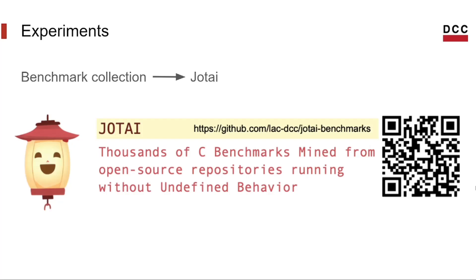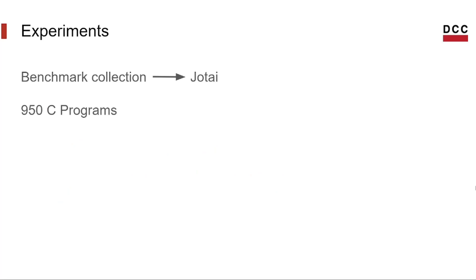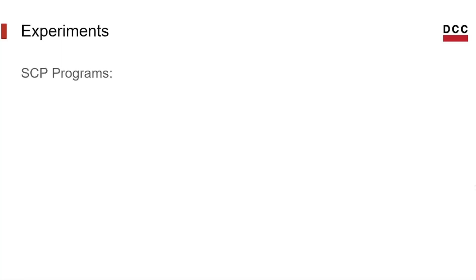From this benchmark, we took 950 C programs. These programs are mined from open source repositories, so we believe they represent real-world applications. To answer the first question about how common SCP programs are, we used Merlin's instrumentation to count the occurrence of the SCP property among these Jyotai benchmarks. Doing that, we got a total of 766 SCP programs, which represents 80% of the total Jyotai programs.